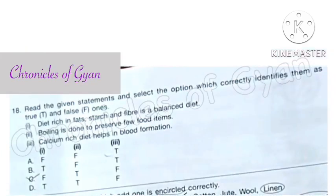Question 18: Read the given statements and select the option which correctly identifies them as true and false ones. Statement 1: Diet rich in fat, starch and fiber is a balanced diet. False statement. Statement 2: Boiling is done to preserve few food items. This is true statement. Statement 3: Calcium rich diet helps in blood formation. This is false statement as iron rich diet helps in blood formation. Correct answer is statement C: False, true, false.